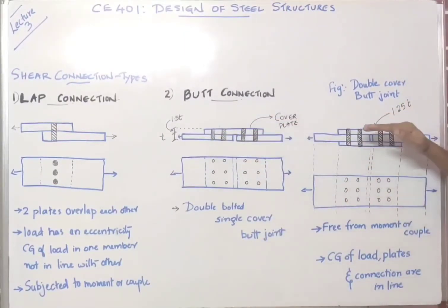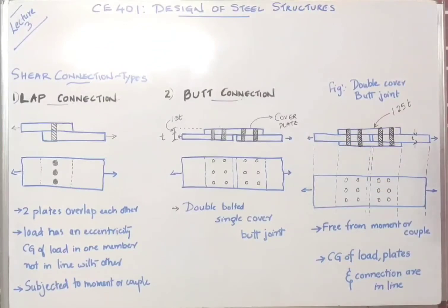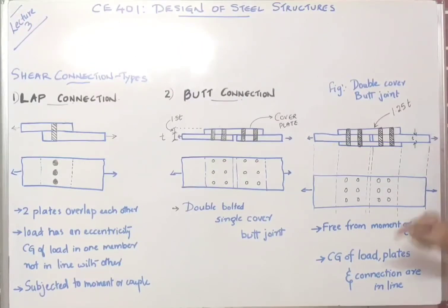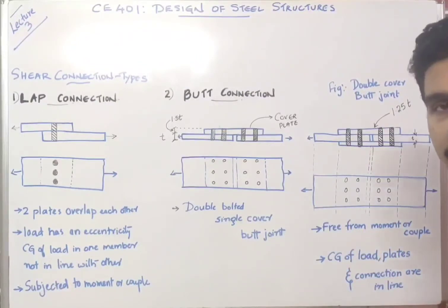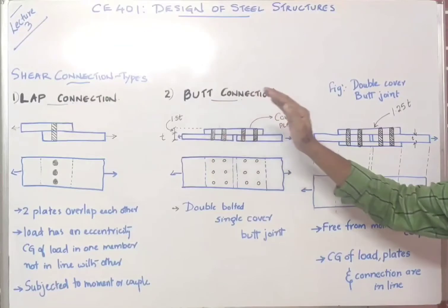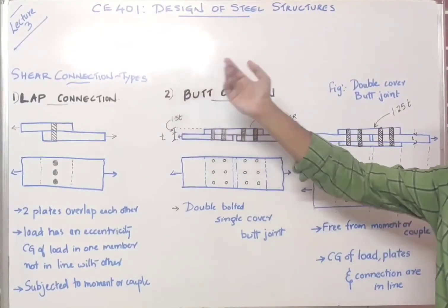If you look at the figure showing two covers — one on the top and one on the bottom — in that scenario, if T is the thickness of the plate, then each cover plate should be 1.25 times T in thickness. We will look into all these things when we deal with the code book IS 800:2007 later on. So, these are the two types of connections — lap connections and butt connections — under shear type of connections.